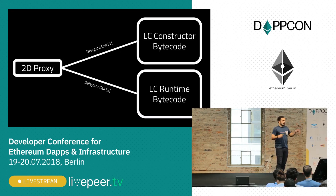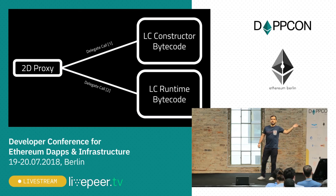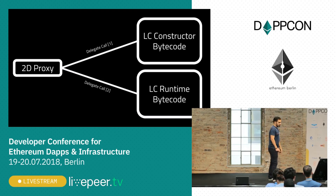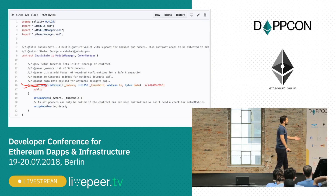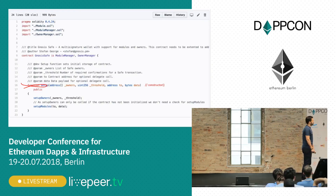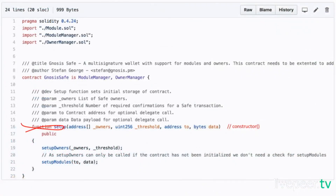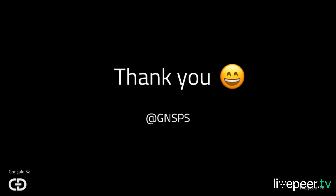Basically, we have a proxy that now makes two delegate calls: one in its constructor and another one for its runtime bytecode. What this would mean is that we could probably just use a constructor in the Gnosis Safe contracts. And this is all, guys. Thank you so much.